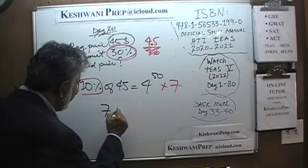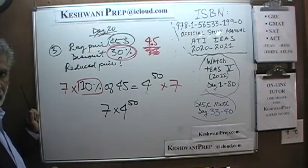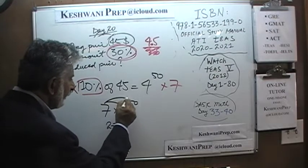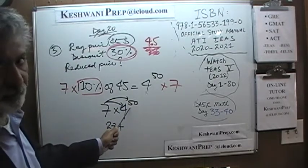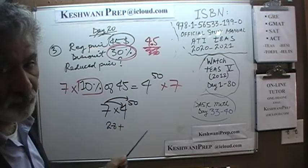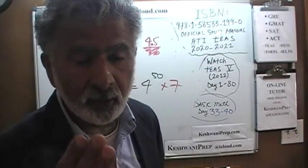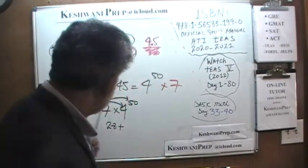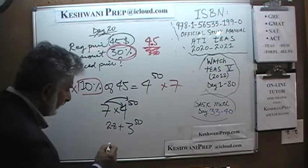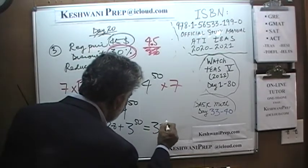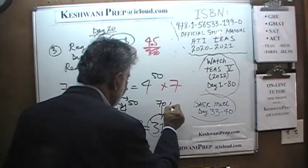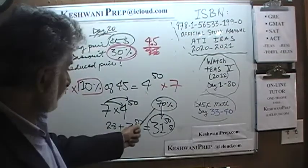Let's see what that is. 7 times 4.50 is what we are trying to figure out. 4 times 7 is 28. And 7 times 50 cents — if you have 7 pairs of 2 quarters, that is $3.50. So $28 plus $3 is $31, and 50 cents — so $31.50 is what you would pay. That represents 70% of the regular price, which is the reduced price.